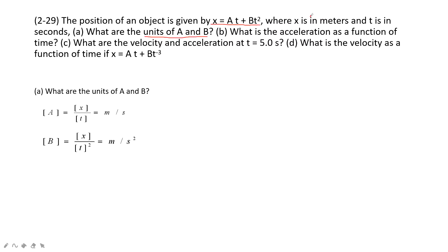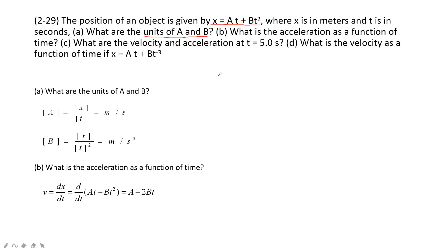The second part asks you for the acceleration as a function of time t. Because we already have the function x with t, we can get the velocity: velocity equals the derivative of x with respect to t, which gives us a plus 2bt. Then we differentiate again to find acceleration: acceleration equals the derivative of v with respect to t, and we get 2b. So the acceleration as a function of time t is a constant — 2b — meaning acceleration does not change with time.